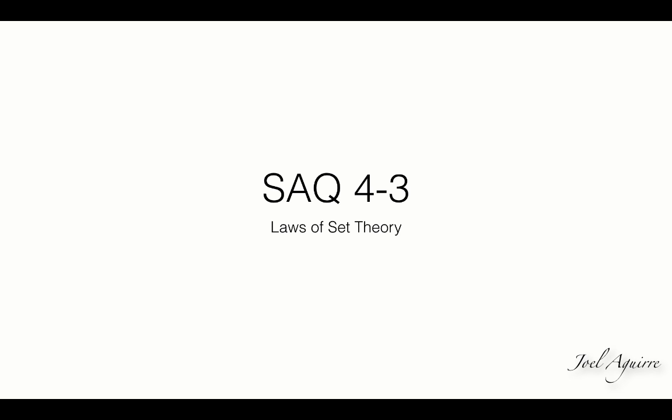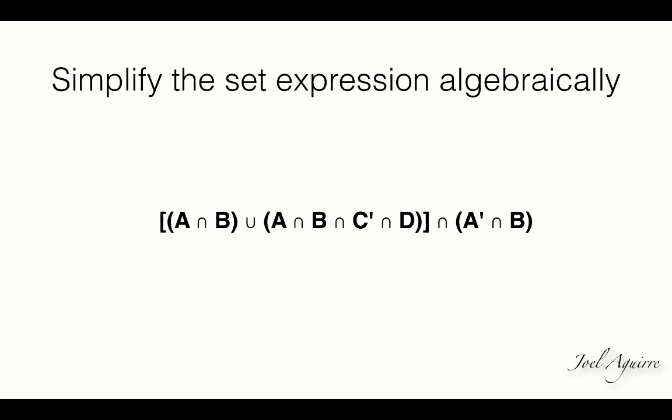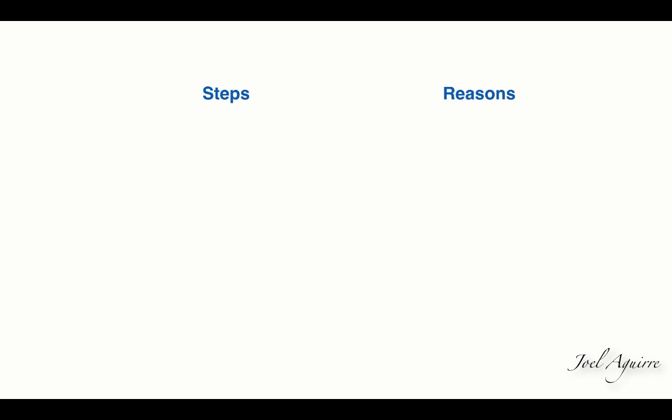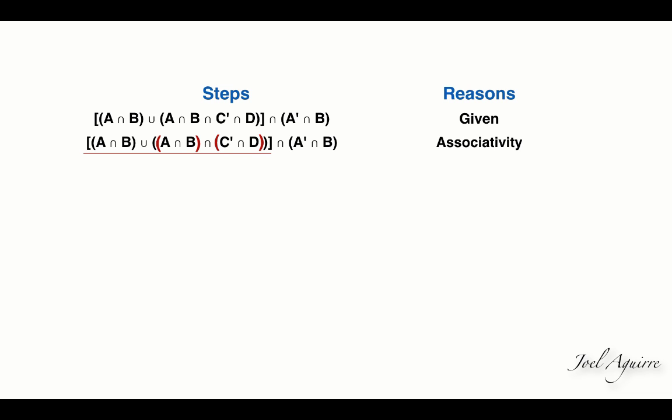Here's my demo of solution to SAQ 4-3. Simplify this expression by algebra of sets. Here again is the given. We may group A intersect B and C complement A intersect B through associativity. And then distribute A intersect B.